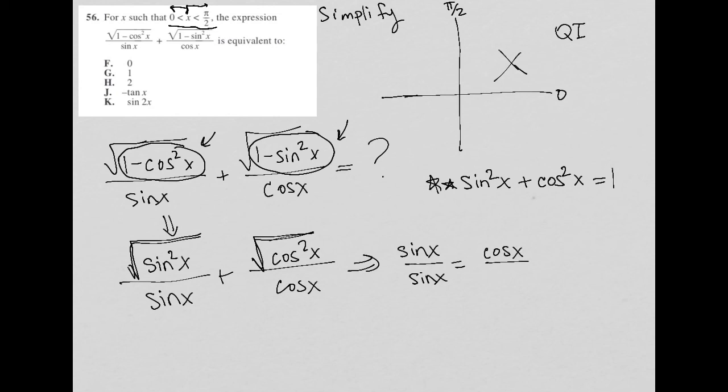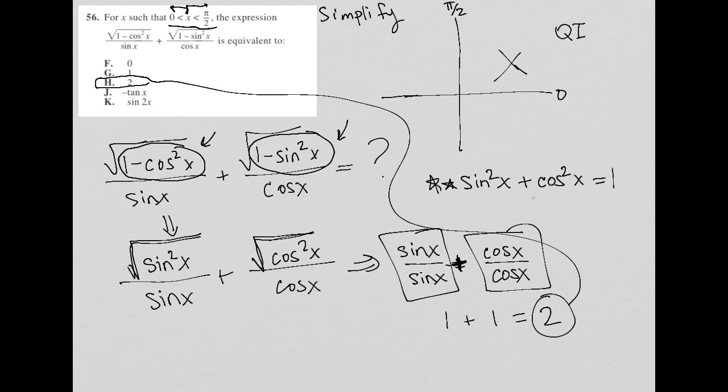So I'd have cos x. Sorry, it's a plus sign. I'd have cos x over cos x. And then sin x divided by sin x, well, that's just 1. And cos x divided by cos x, well, that's also 1. And 1 plus 1 is 2. And therefore, the answer to this question is choice h.